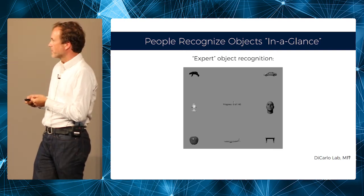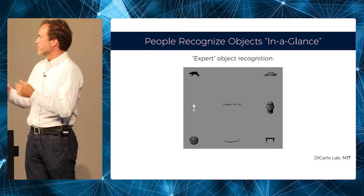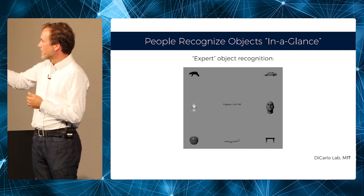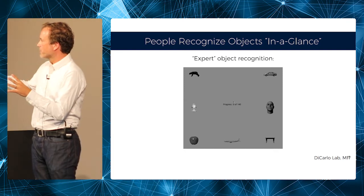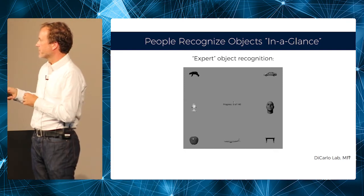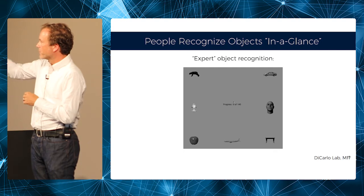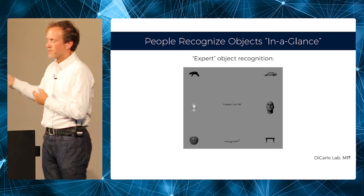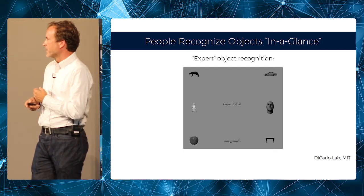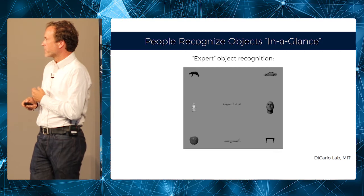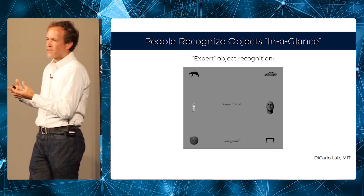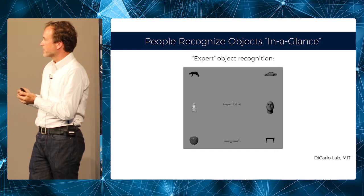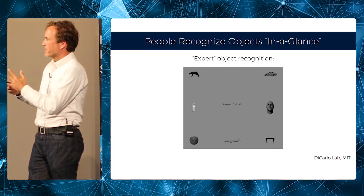This is an example of object recognition in a glance — it's a psychophysical experiment. You are the subject, and you look at the screen where in the middle an object is flashed. Within a very short amount of time you have to recognize what kind of object it is and to which of these seven categories the object belongs.